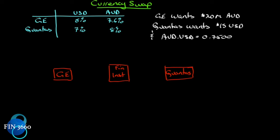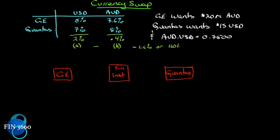We have two companies: an American company GE and an Australian airline Qantas. In the US, GE can borrow at five percent and Qantas at seven percent. In Australia, where interest rates are higher, GE faces 7.6 percent and Qantas eight percent. GE is the better company in both markets, but the key is the disadvantage Qantas has: in US dollars Qantas is disadvantaged by two percent, whereas in Australian dollars Qantas is disadvantaged by only 0.4 percent.